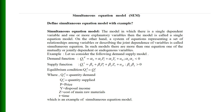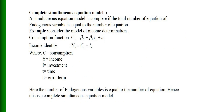This is an example of a simultaneous equation model. A simultaneous equation model is complete if the total number of endogenous variables is equal to the number of equations. For example, consider the Keynesian model of income determination: the consumption function is C_t = β₀ + β₁Y_t + u_t, and the national income identity is Y_t = C_t + I_t. This is a two-sector model where C is consumption expenditure, Y is income, I is investment, t is time index, and u is the error term.